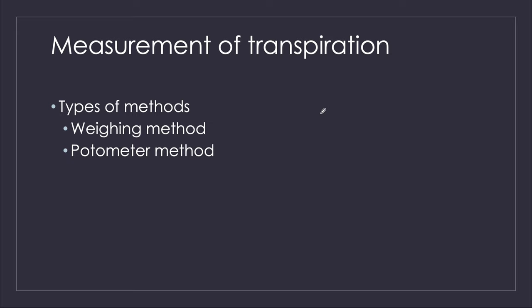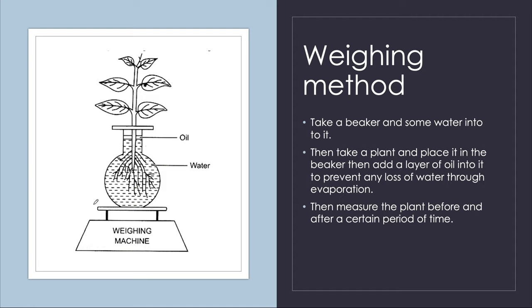Now we have to measure transpiration. When a leaf goes through transpiration, we need to measure how much transpiration has happened. For that we have a few methods: one is the weighing method and the other is the potometer method. The weighing method is very simple — it's basic and not in the syllabus, but just for your information.